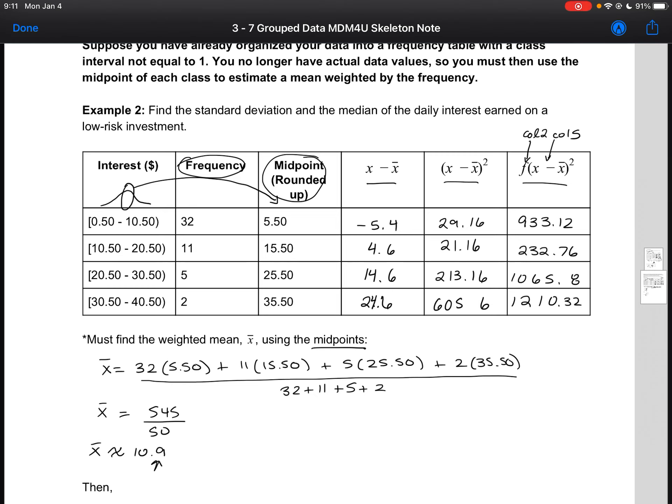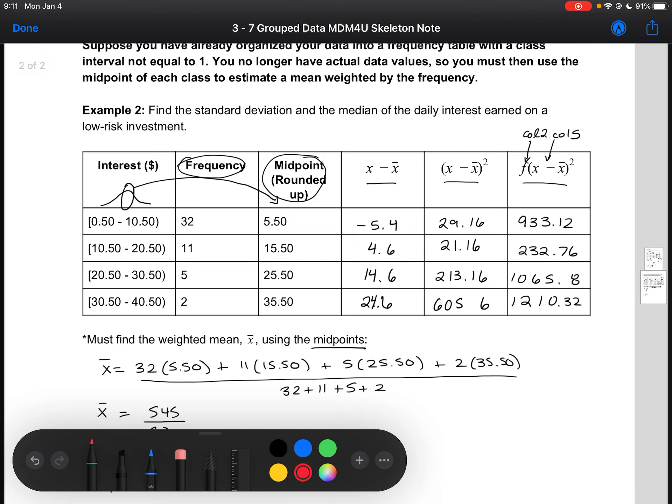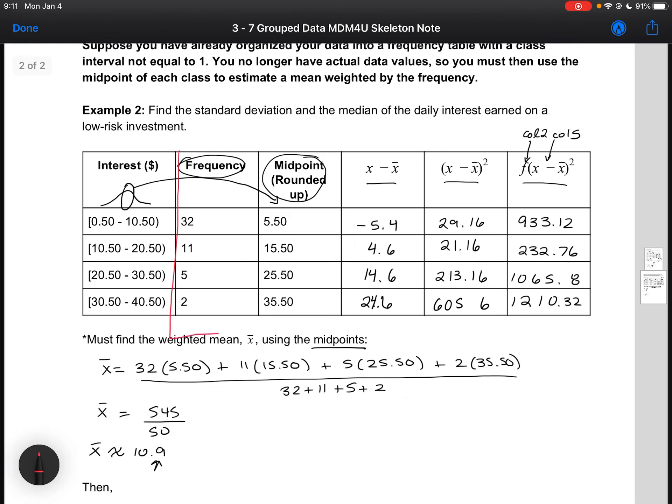Now we need two totals in order to be able to calculate our standard deviation. The first total that we need is same as above. We need the total of our frequency column because that tells us our number of data points that we are looking at. So we can add those up. This is 50. The second one that we need is the total of our final column here because that is the sum of the squares of our deviations. And if we add those all up, we would get 3,442.